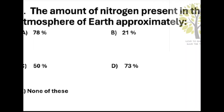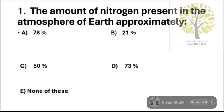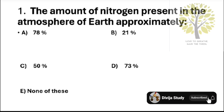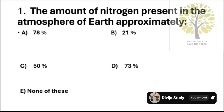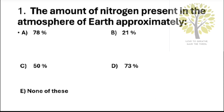Question number 1: The amount of nitrogen present in the atmosphere of earth approximately. Option A: 78%. Option B: 21%. Option C: 50%. Option D: 73%. Option E: None of these. The answer is Option A, 78%.